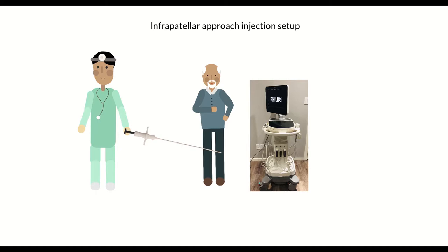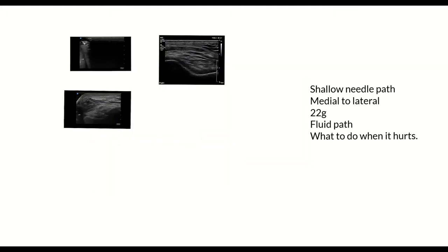You want to make sure that you have a few things in order. I like to position myself here and then have the patient between myself and the ultrasound machine, shooting across the table. For this approach we're doing a medial to lateral approach, and if you're doing a left knee then you'll have to move the right leg out of the way, and vice versa for the right leg.